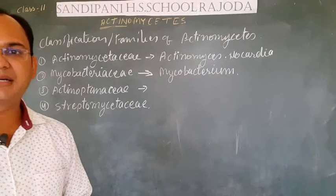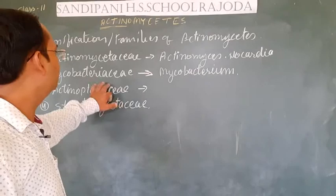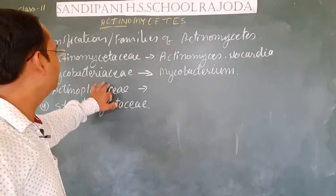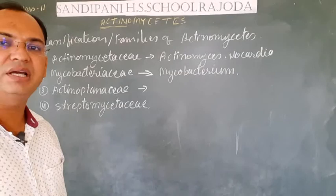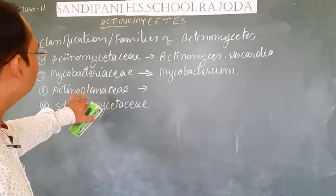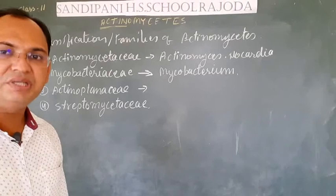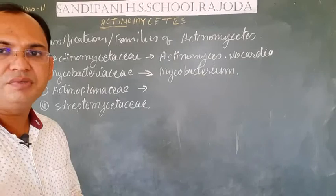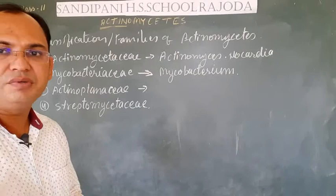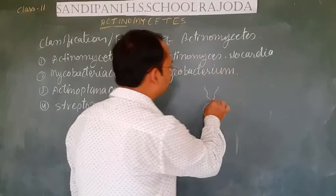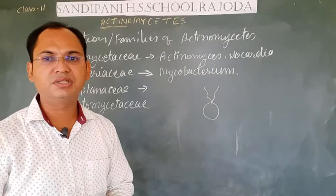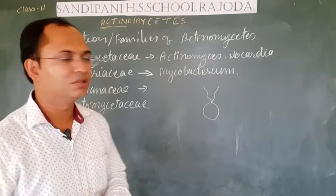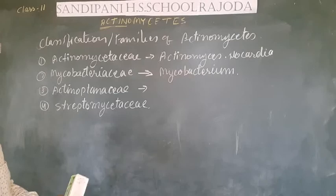The third family, Actinoplanaceae: the major character of this family is that aquatic Actinomycetes are included in this group. The aerial part of Actinoplanaceae members bears spores or special types of sporangia which contain biflagellated spores — spores that have two flagella, which are hair-like projections. The example of this family is Actinoplanes.